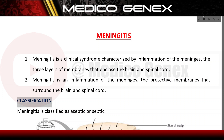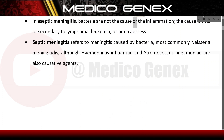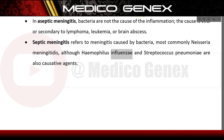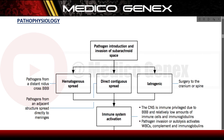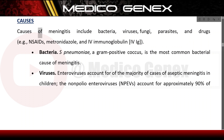Meningitis is classified as aseptic or septic. In aseptic meningitis, bacteria are not the cause; the cause is viral or secondary to lymphoma, leukemia, or brain abscess. Septic meningitis refers to meningitis caused by bacteria, most commonly Neisseria meningitidis, although Haemophilus influenzae and Streptococcus pneumoniae are also causative agents.